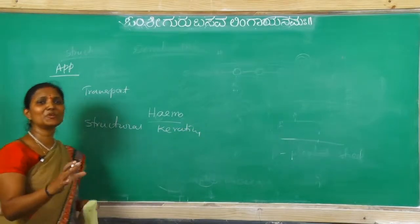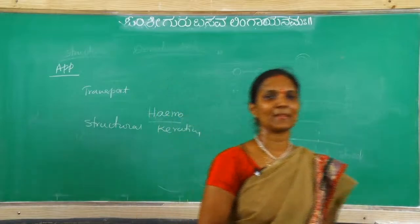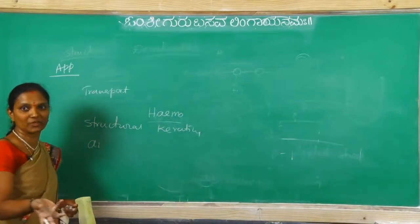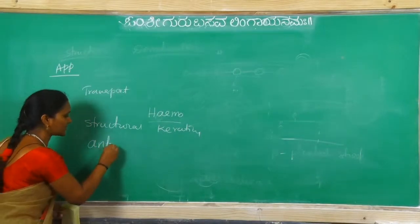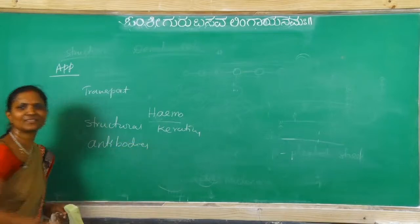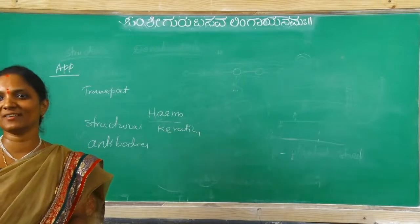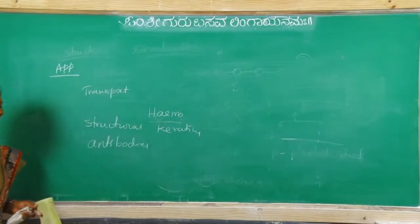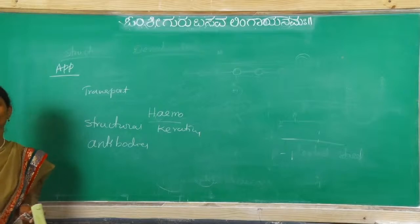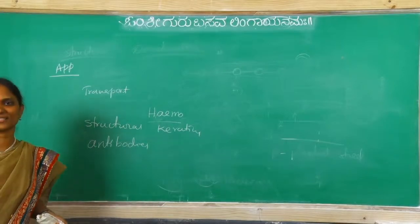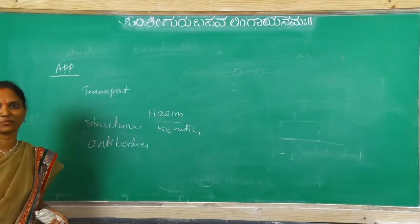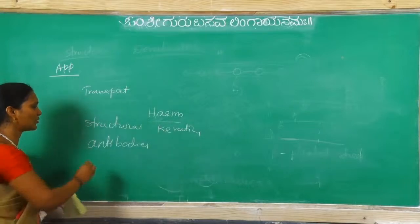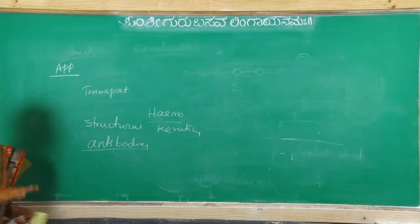And immunoglobulin G - proteins can act as antibodies, and antigens are also proteins. Antibodies fight with the antigen. Foreign material enters into our body and causes some diseases. To fight with the diseases, our body releases antibodies. Immunoglobulin G is an example for antibodies. Proteins are antibodies.